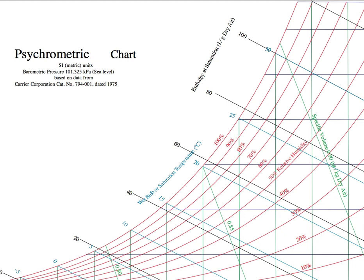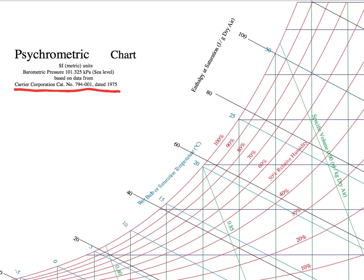We need to give credit to the people who made this psychrometric chart. There are so many versions of the psychrometric chart and they may look different, but they should all be equivalent if they are defined for the same barometric pressure. For example, this psychrometric chart is made by the Carrier Corporation, and there are many psychrometric charts freely available from the internet.